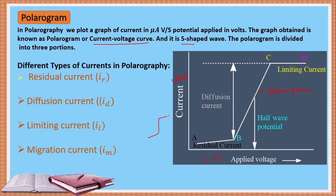The polarogram is S-shaped. This S-shaped wave is divided into different portions. In this current-voltage curve, we have residual current (denoted as ir), diffusion current (denoted as id), and limiting current (il).